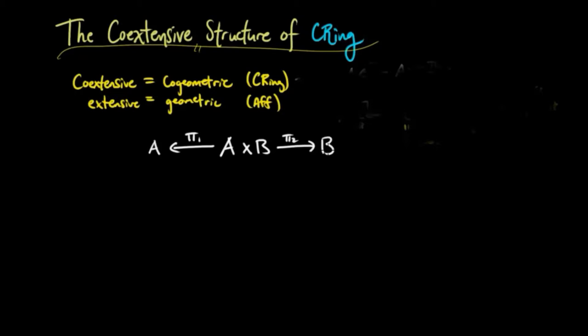And so if we have a product between two rings A and B with their projections to A and B, and set I sub I to be the kernel of the projections, we see that the two projections are actually regular epimorphisms.